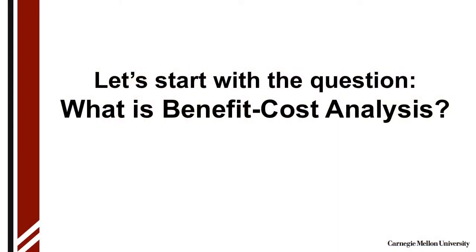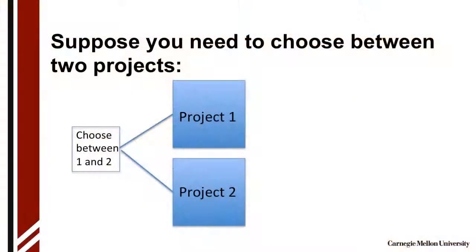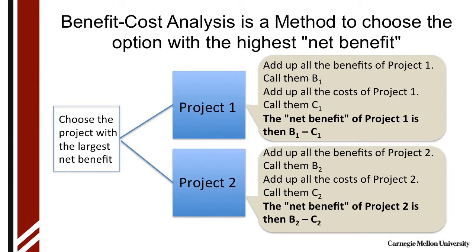So let's start out with that question: what is benefit-cost analysis? A benefit-cost analysis is a method to choose the option that has the highest net benefits. For example, for project one, I add up all the benefits and then subtract off all the costs — that's the net benefit for project one. Similarly for project two, I add up all the benefits, add up all the costs, take the difference, and select the one with the higher net benefits.